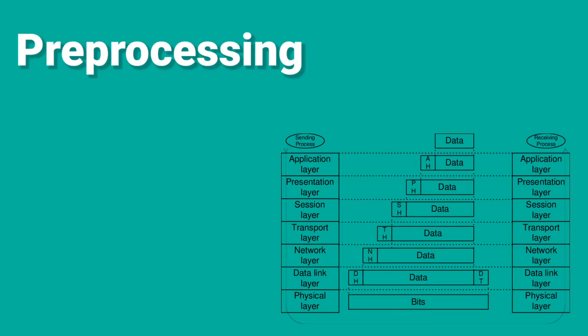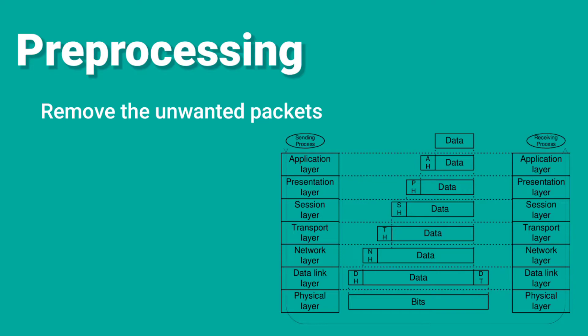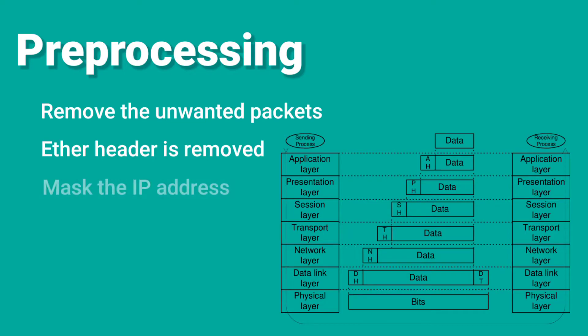The main next step is preprocessing. In the preprocessing stage, the main thing that happens is the removal of unwanted files that get captured through Wireshark. The main unwanted files are the handshaking packets and other files. Since we are capturing these packets in the data link layer, there will be an Ethernet header.